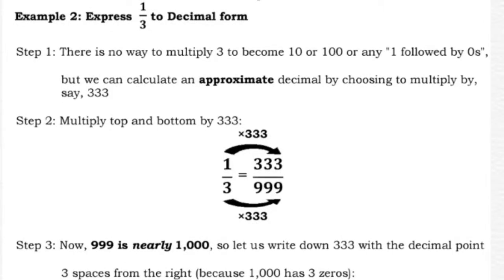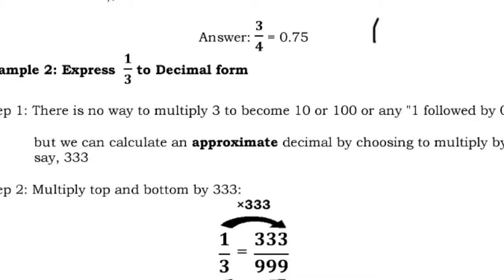Example 2: express 1/3 to decimal form. Step 1: there is no whole number you can multiply 3 by to get exactly 10, 100, or 1000. But we can calculate an approximate decimal by choosing to multiply by 333. So 3 times 333 equals 999, which is close to 1000. Thus 1 times 333 is 333 over 999 — write 0.333 with the decimal point 3 spaces from the right. One third equals 0.333, accurate to 3 decimal places. You can also just divide 1 by 3 to get the same result.